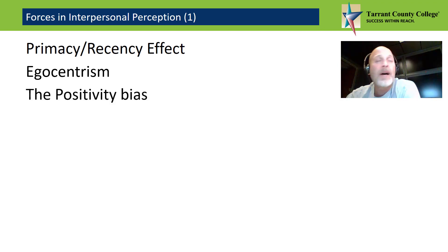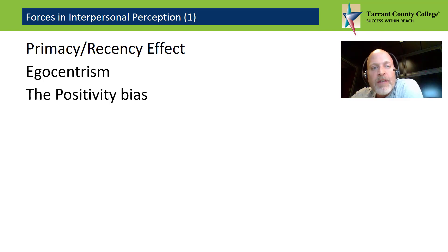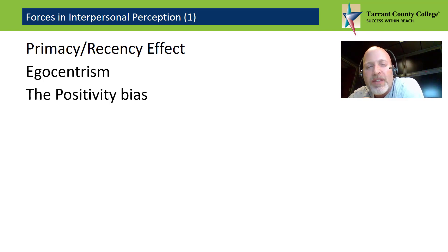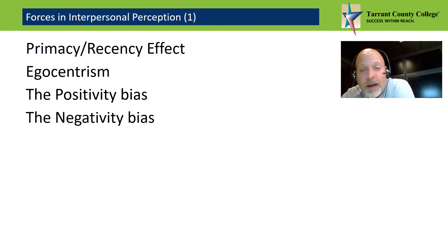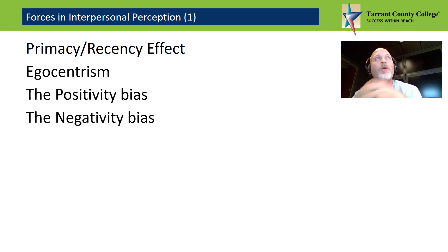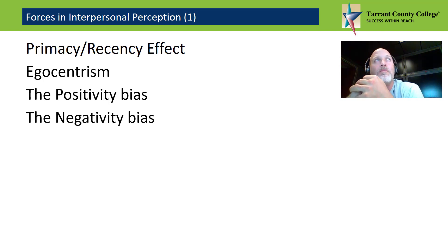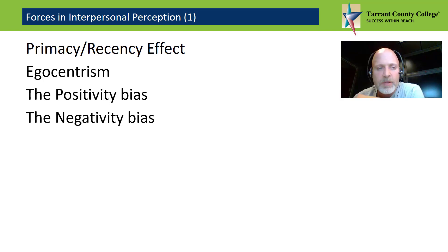Next is the positivity bias. The positivity bias causes us to perceive information in an overly idealistic way — we want to simplify and explain things simply because it helps us understand them. Conversely, the negativity bias leads us to view information in an overly pessimistic way. These are two counterbalancing effects that influence our interpersonal perceptions of others.